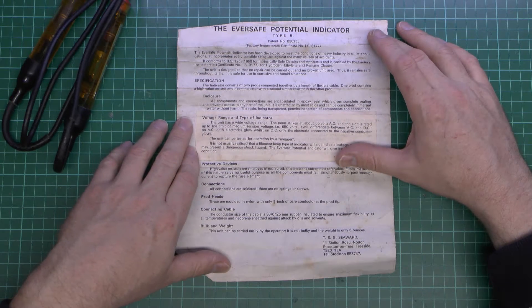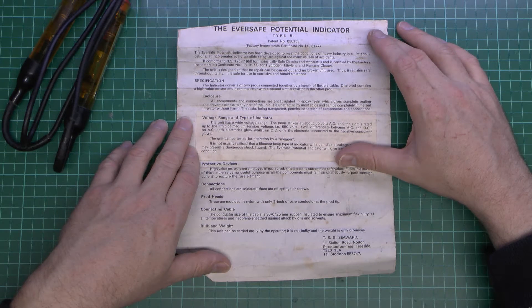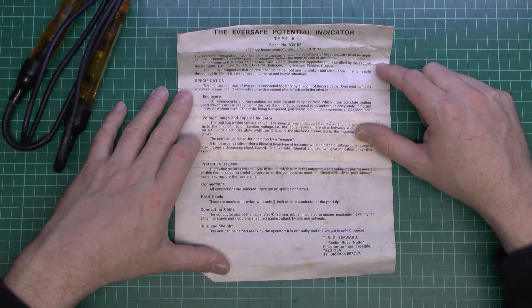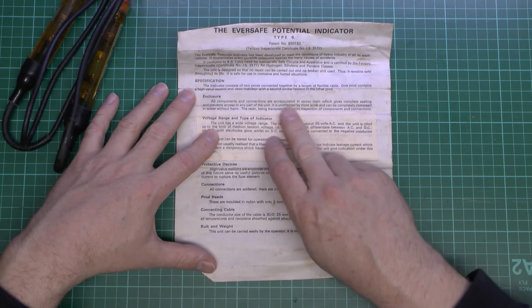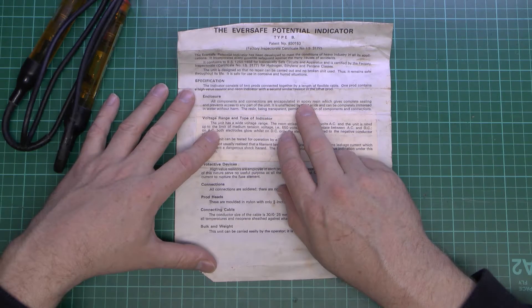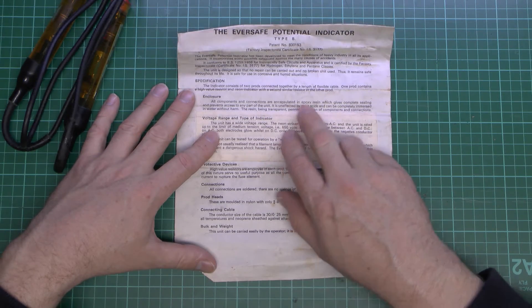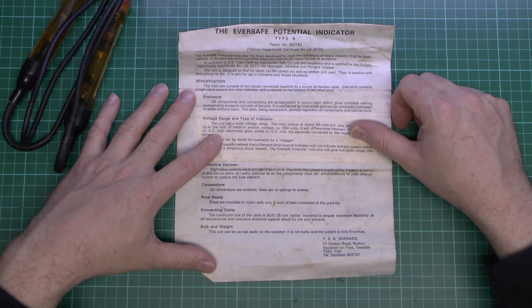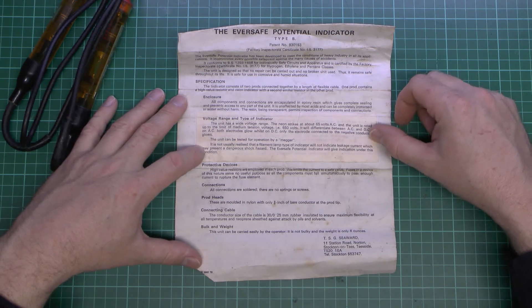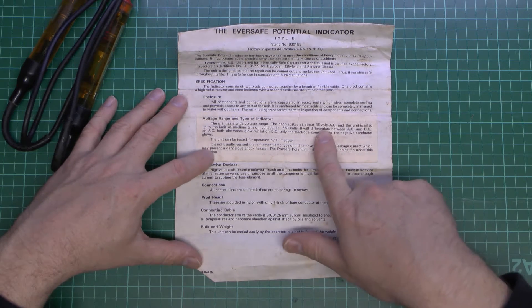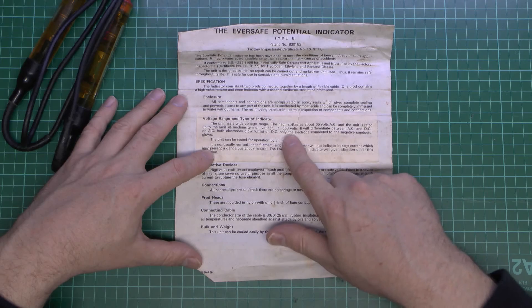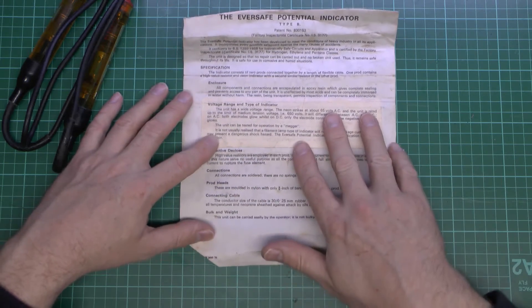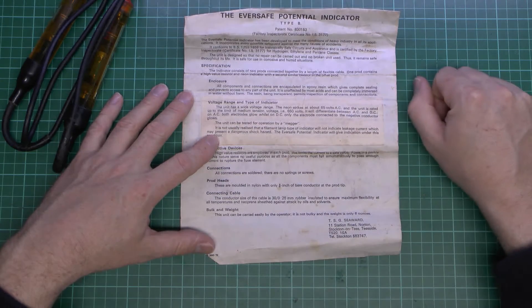Essentially it's a two-pole device, contains a neon indicator inside, and it's also got the resistors in there to limit the current. It's enclosed in epoxy resin, so the whole thing is totally potted in there and sealed, so it won't have any danger of getting water and other contaminants inside. It works from about 65 volts AC and goes up to around 650 volts. Notice it's called medium voltage there, that's not the correct term anymore, but of course it was when this was actually made.